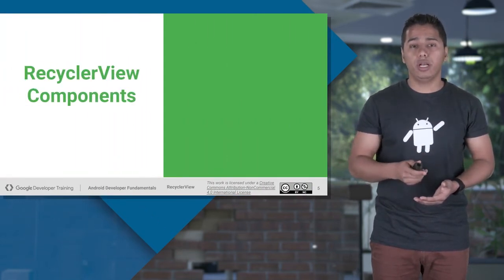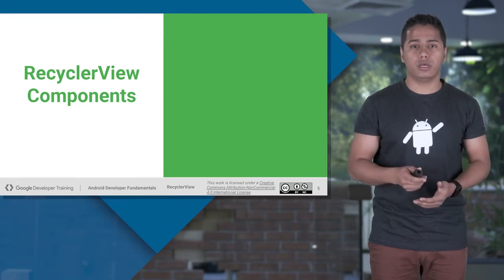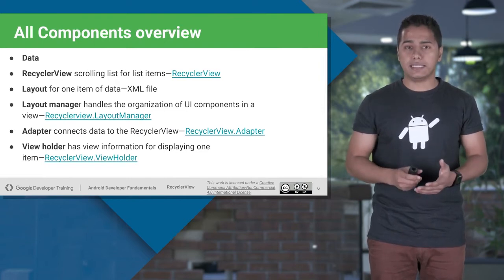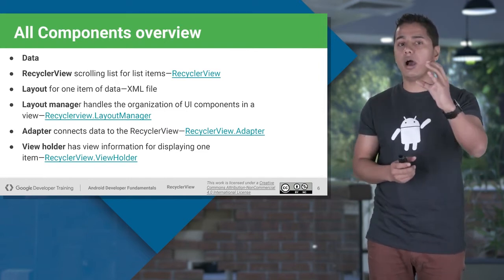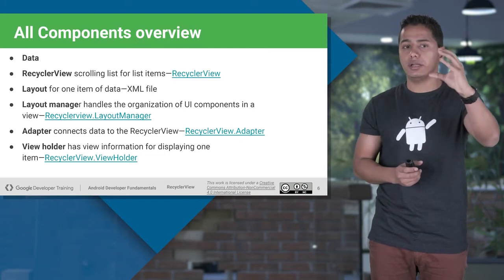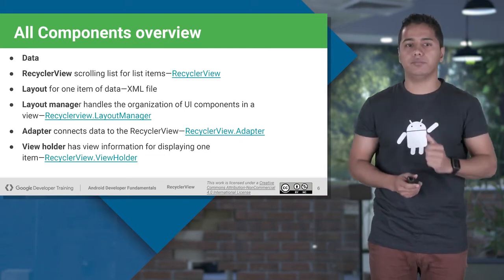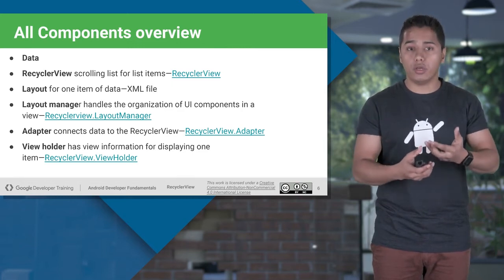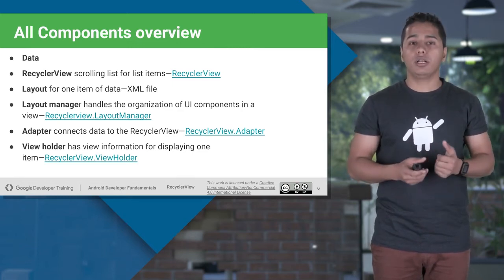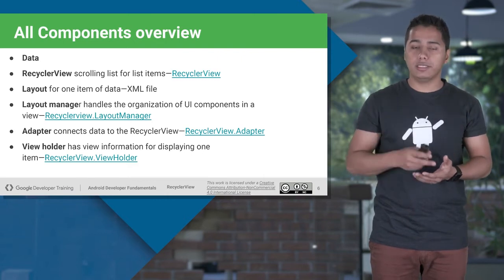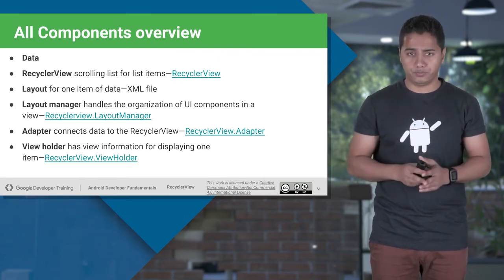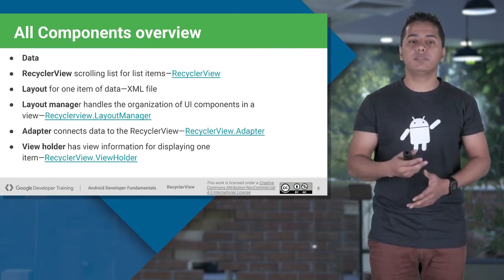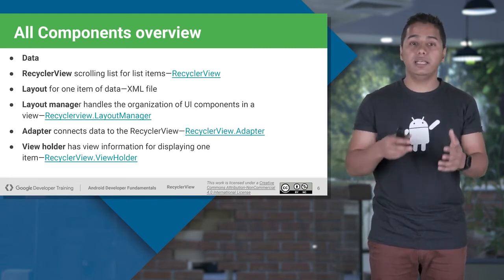Let's see how it really works and what are the components inside RecyclerView. First comes the data — what you want to show on each and every item. Second, the RecyclerView view itself. A RecyclerView can be a scrolling list, a grid view, or a staggered view. Those are actually managed by a layout manager inside the RecyclerView.